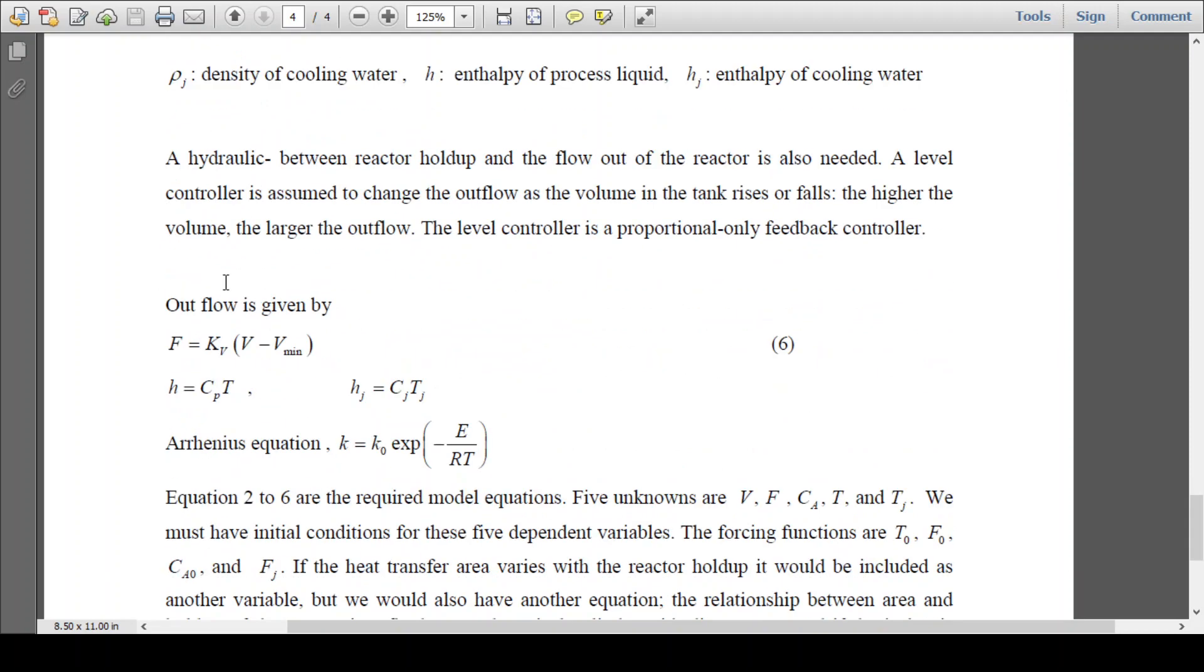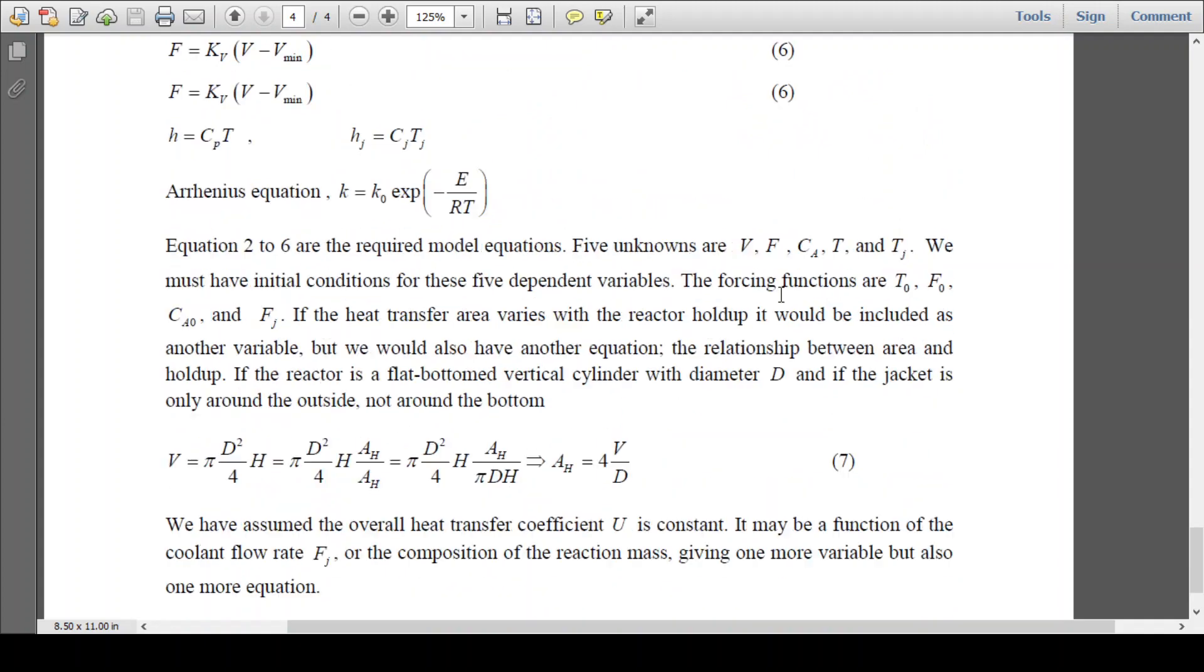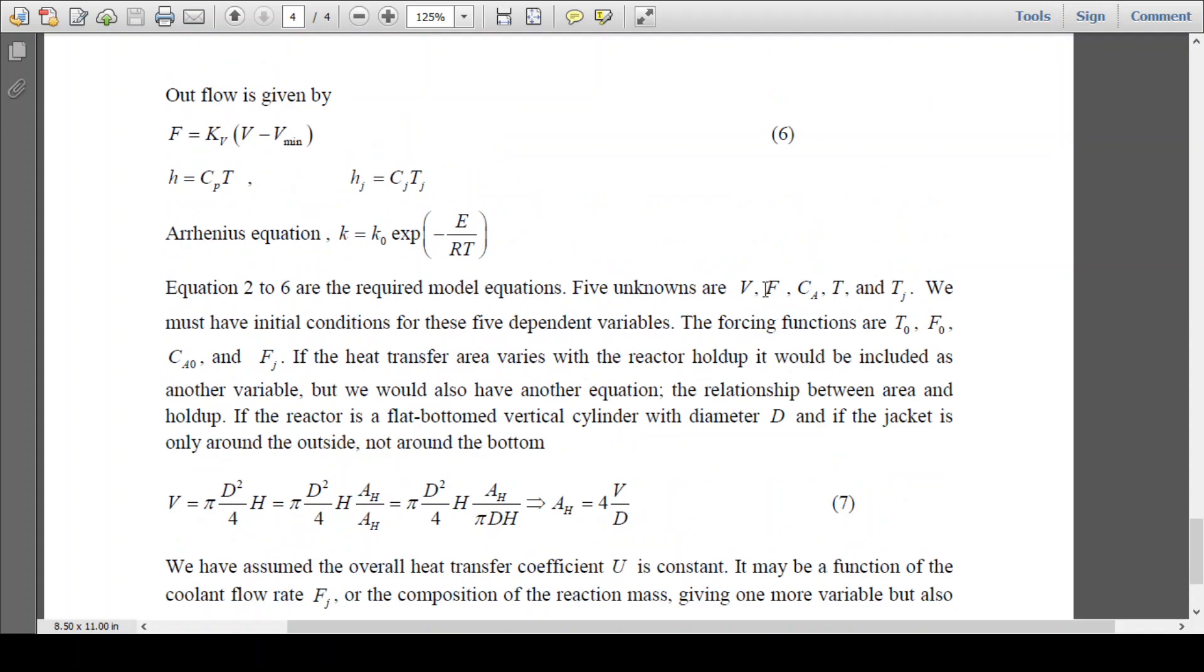Now the flow rate out from the reactor is being calculated by the flow controller. kv(V - Vm), h = Cp·T, hj = Cj·T. Arrhenius equation is being considered: k = k0·exp(-E/RT). Now the governing equations you have, the variables are five unknowns: V, F, Ca, T, and Tj.